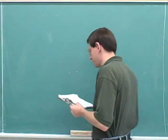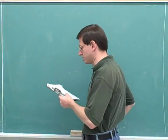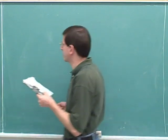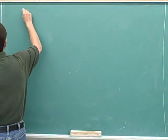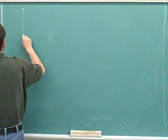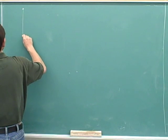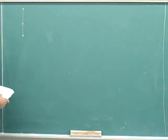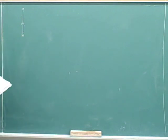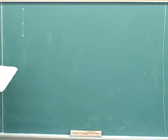Step one in our systematic approach is to draw the object's path. There's a pretty simple path here — it starts around the ground and then it's thrown up. That's our path. Let's try to build as much information as we can into that path.